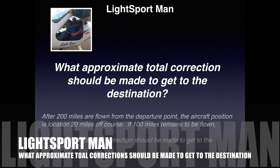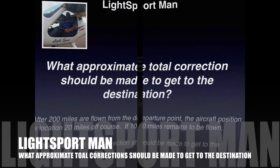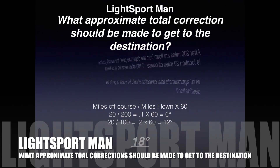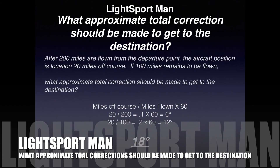This question is on the FAA test — not the same exact figures — and I have a couple of students that don't understand this, so I wanted to make this video. So once again, the question is: what approximate total correction should be made to get to the destination? After flying 200 miles from the depart point, the aircraft is 20 miles off course and I still have 100 miles to go.